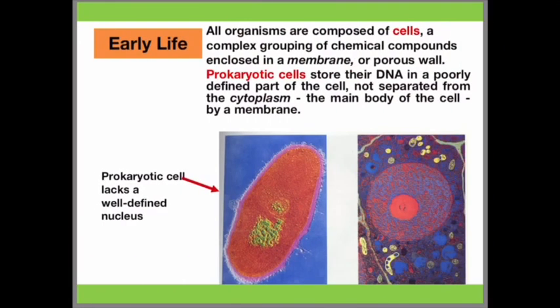The first type of cell that existed in early life was prokaryotes — for example, simple bacteria. This type of organism does not have a true nucleus. They store their genetic material in a poorly defined region of the cell, not separated from the cytoplasm, since most of their organelles are not membrane-bound. These are the defining characteristics of a prokaryotic cell.